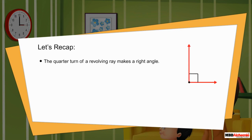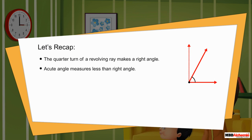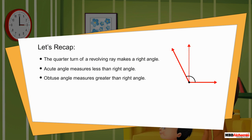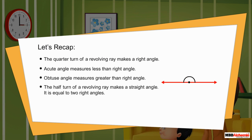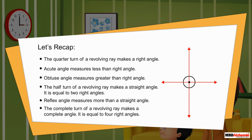Let's recap. The quarter turn of a revolving ray makes a right angle. Acute angle measures less than a right angle. Obtuse angle measures greater than a right angle. The half turn of a revolving ray makes a straight angle — it is equal to two right angles. Reflex angle measures more than a straight angle. The complete turn of a revolving ray makes a complete angle.